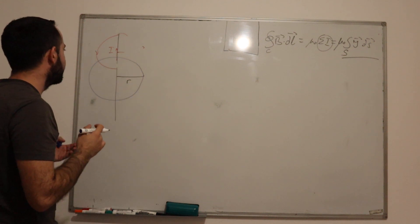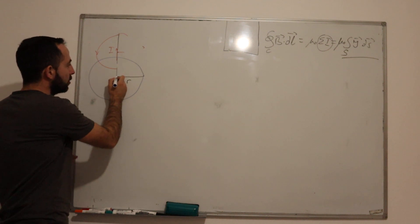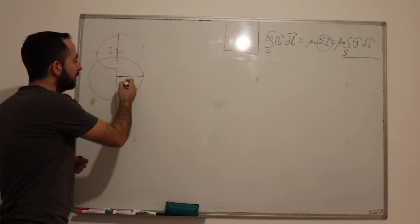Why? Because our magnetic field is in a circle. So this is our closed contour and it has a radius R.